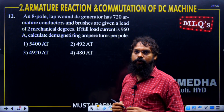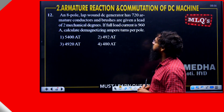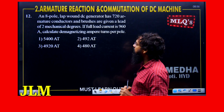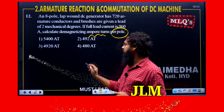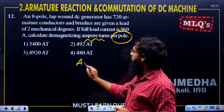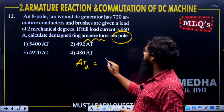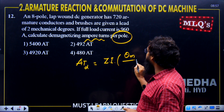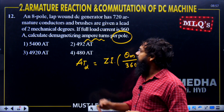This is a numerical problem. An 8-pole lap-wound DC generator has 720 armature conductors and brushes given a lead of 2 mechanical degrees. If full load current is 960 amperes, calculate the demagnetizing ampere-turns per pole. The formula for demagnetizing AT is: AT = Z × I × θ_m / 360, where Z is the number of conductors, I is the armature current per path, and θ_m is the brush lead in mechanical degrees.